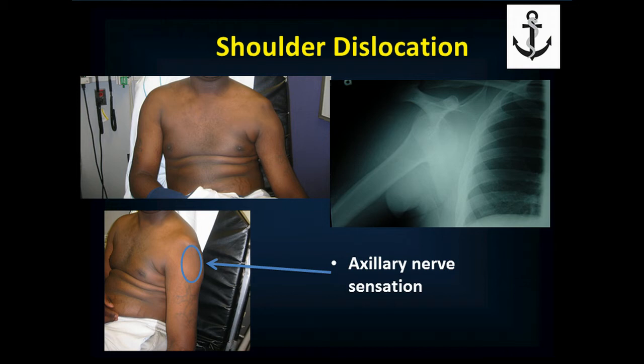Here's a shoulder dislocation. Looking at the patient from the front, you can see the patient's left shoulder is dislocated. The right shoulder appears normal — it goes straight out then turns down the arm. On the left shoulder you can see there's a divot where the shoulder should be. In the lower picture, there's a circle showing where the axillary nerve gives sensation — that's where you get patch anesthesia. The top picture shows the head of the humerus actually dislocated from the joint.